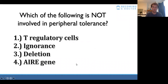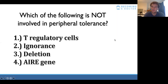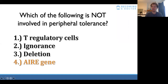Final quiz question: which of the following is not involved in peripheral tolerance? The correct answer is the AIRE gene — AIRE is found within the thymus and presents every type of self-antigen to T cells, so it's involved in central tolerance, not peripheral tolerance.